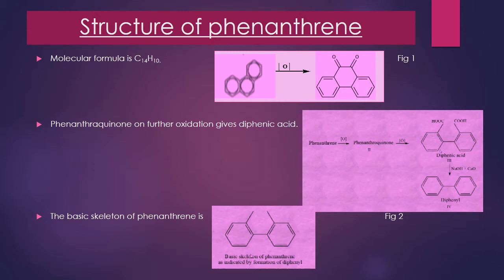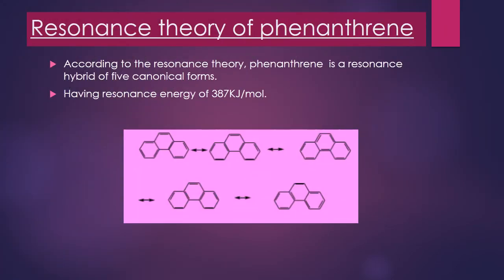This skeleton contains 14 carbon atoms in phenanthrene while two hydrogen atoms are fewer. Accommodating the remaining two hydrogens indicates that the phenanthrene structure has three benzene rings fused in an angular manner.